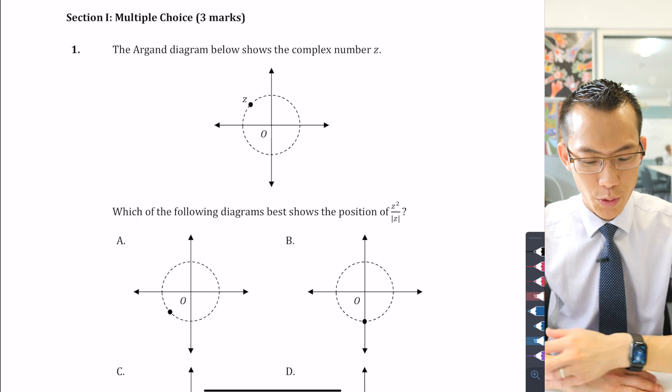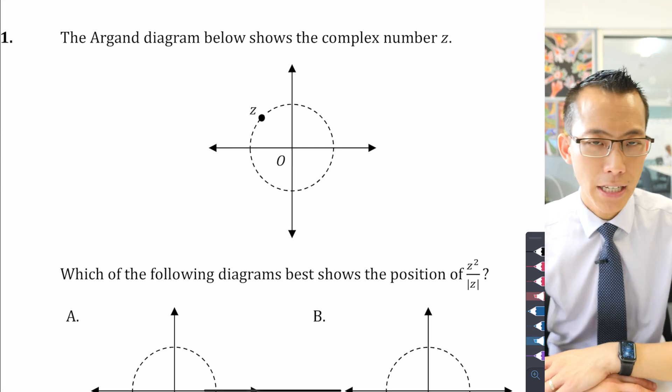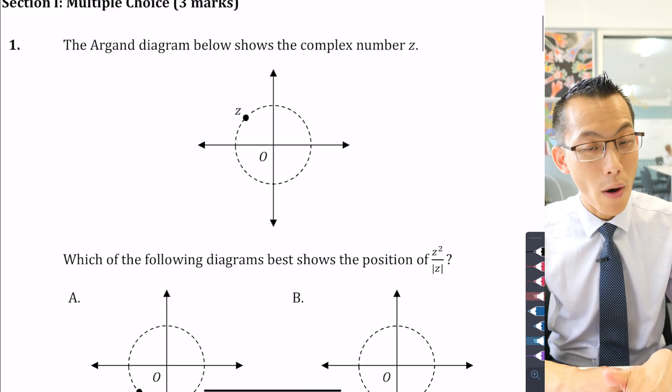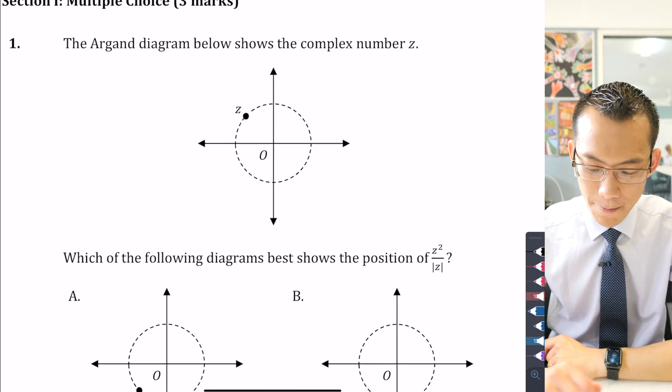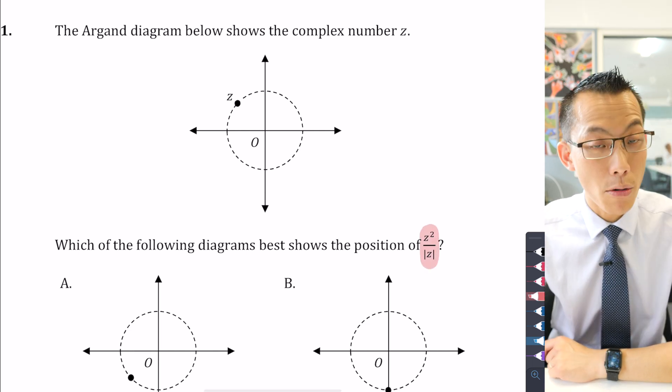Here's the first question in multiple choice. It shows an Argand diagram with the number z placed on it, but you don't know very much about z. So it might seem quite hard to work out if that's z, where is z squared divided by the modulus of z, as the question asks.